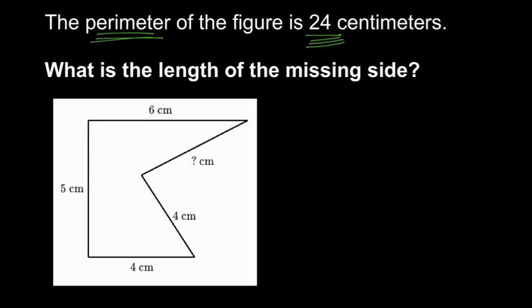But what we want to know is what is the length of the missing side? Well, the missing side is the side we're not told. So it will be this one here because we have this question mark. It's missing, it is not labeled. So we've got to figure out what number should go on this missing side so that the entire length is 24 centimeters.